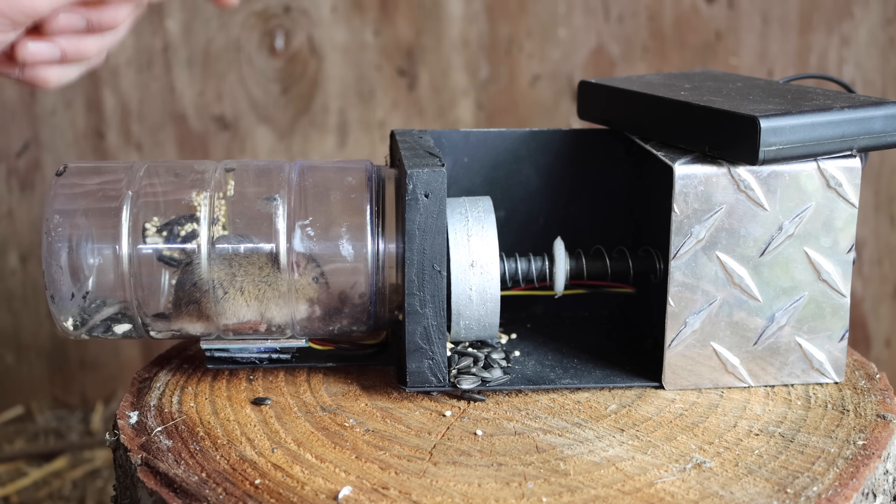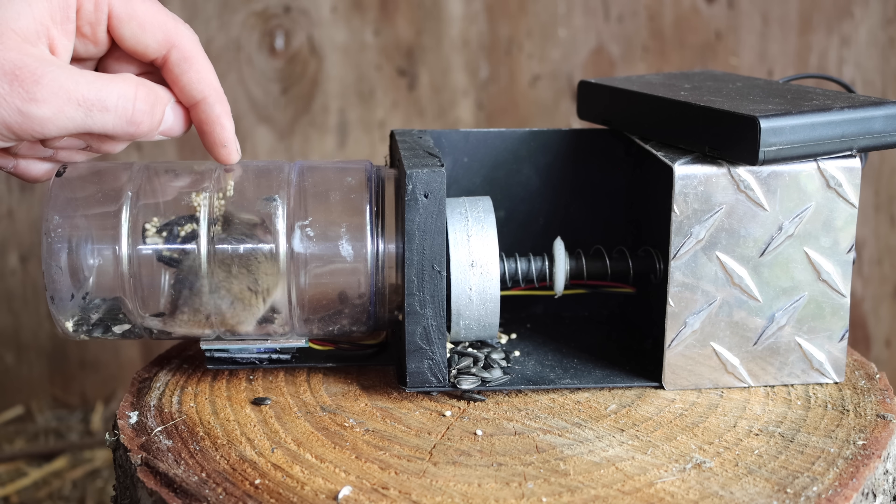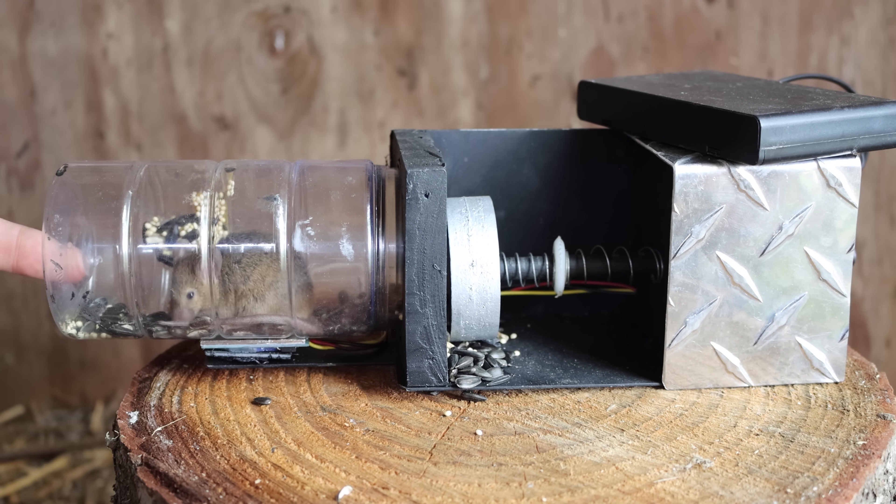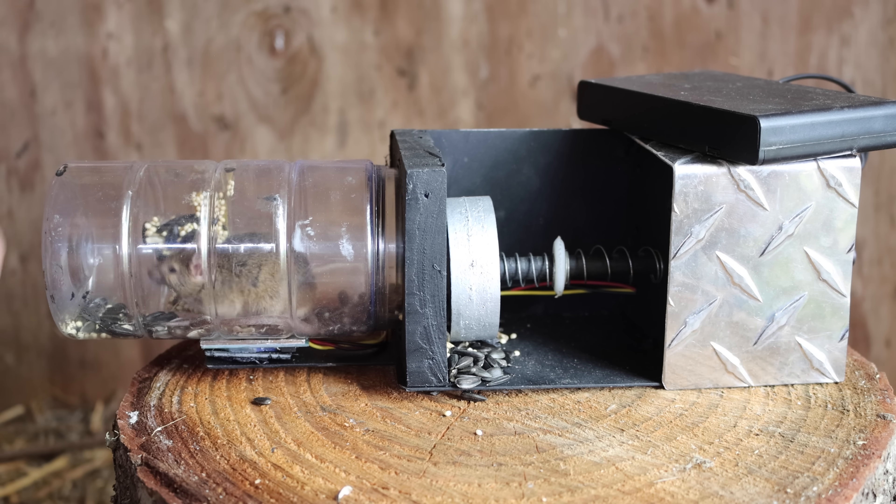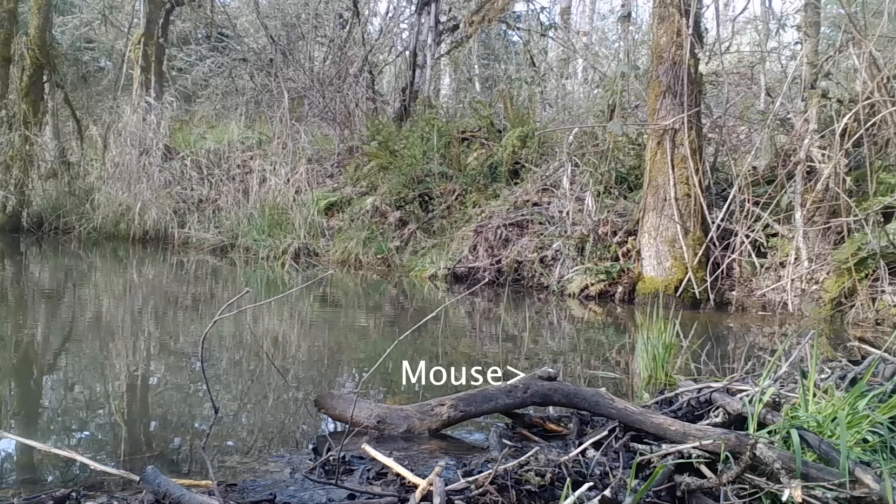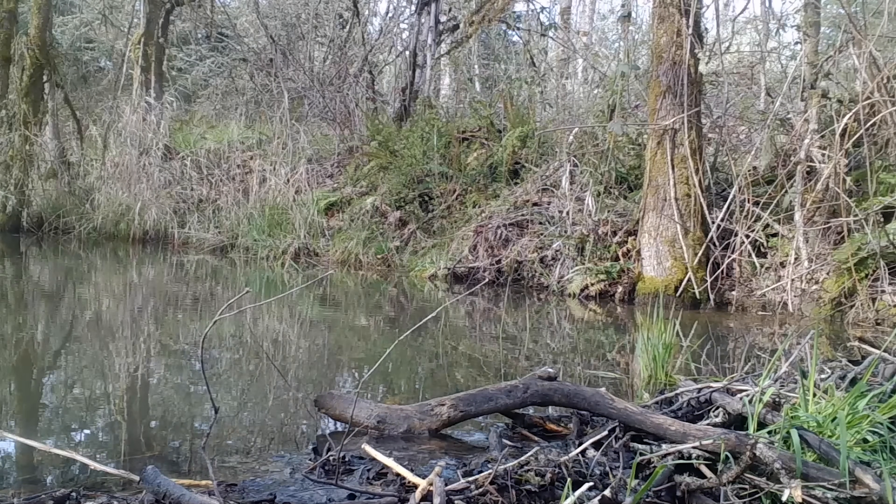But what we caught is a non-native invasive species called a house mouse. Because it's not part of the natural ecosystem, I can't set it free in the wild. Instead, I'm going to humanely dispatch it and feed it to wild animals. So let's go set up the motion cameras and see what comes along and enjoys a mouse snack.